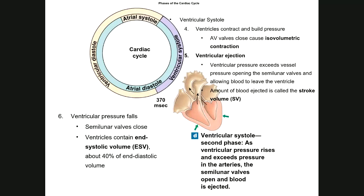As ventricular pressure rises, it will exceed the pressure in the arteries. Once it exceeds arterial pressure, the semi-lunar valves open and blood is ejected. This allows blood to leave the ventricle. The amount of blood ejected is called the stroke volume (SV). Then ventricular pressure drops, the semi-lunar valves close, and what remains in the ventricle is the end systolic volume (ESV) — almost 40% of the end diastolic volume.